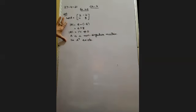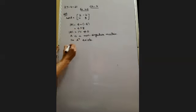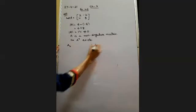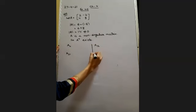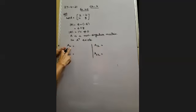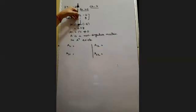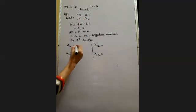Since the matrix is non-singular, A inverse exists. Whenever you have to find the inverse, first check the determinant — it should not be equal to zero. After that, we have to find the adjoint. A11 means first row, first column — delete those elements, and we are left with 3.